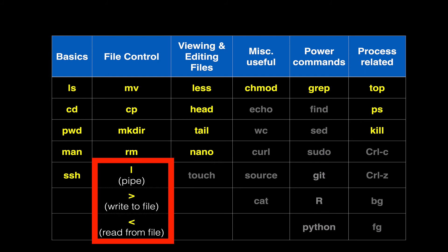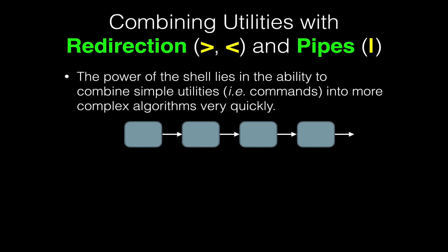Frequently what we have to do is turn to these special so-called pipe and redirect commands. Mastering these, highlighted here in this table of key Unix commands, will give us Unix superpowers, because they'll allow us to combine lots of individual programs together to accomplish workflows and accomplish new things. The power of the shell really lies in this ability to combine simple utilities into more complex algorithms very quickly.